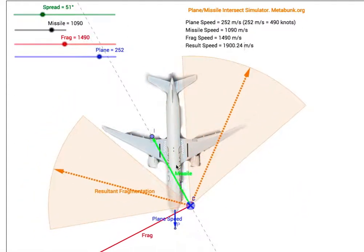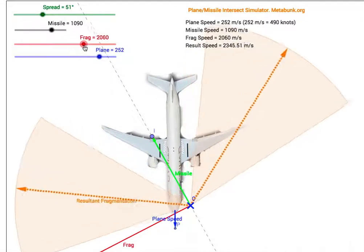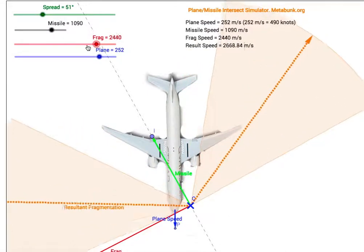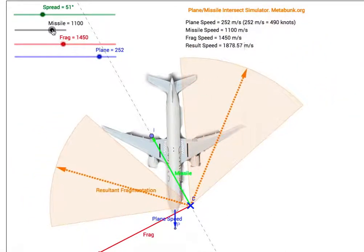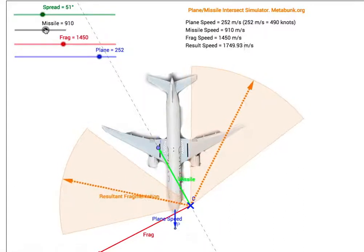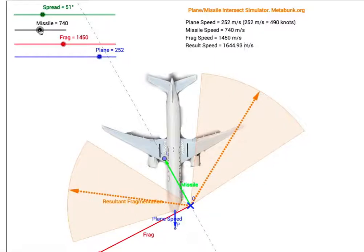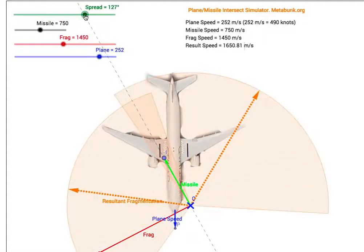The unknowns here are basically: what is the fragmentation speed of the warhead — you can see quite a bit of difference with different speeds — what was the speed of the missile (was it 1000mps closing speed or perhaps just 750mps with a relative speed of 1000?), and was the spread actually 56 degrees as some people have suggested, or was it a higher or lower value?